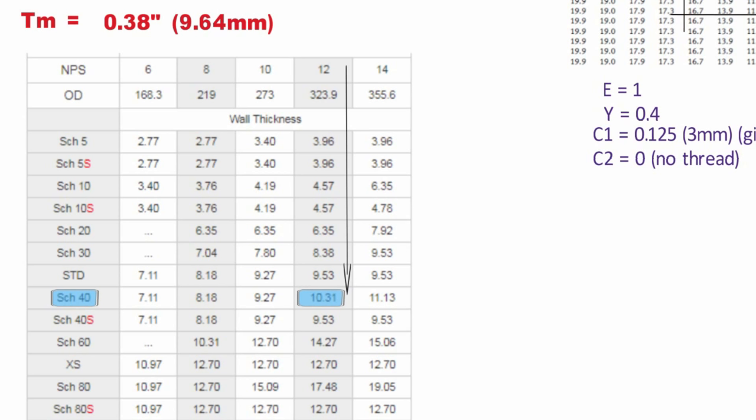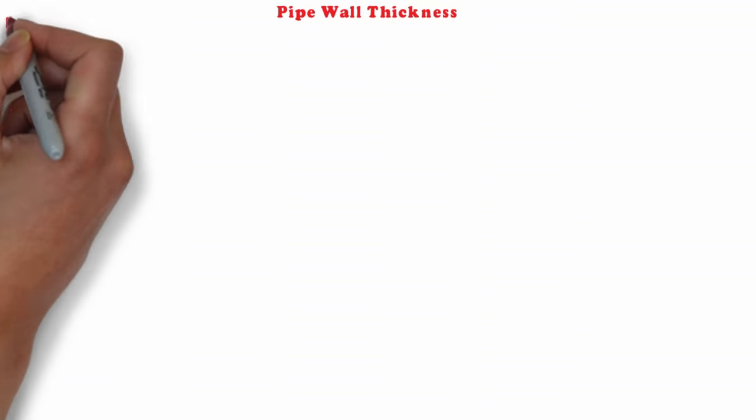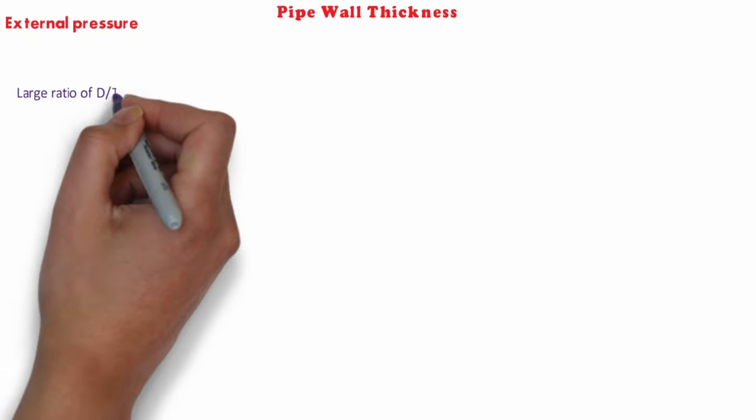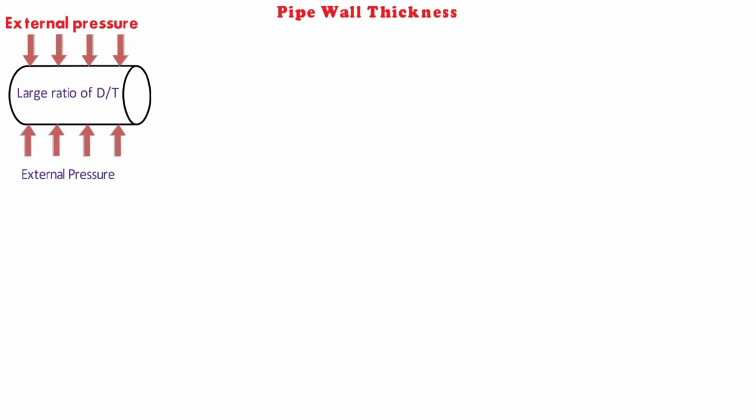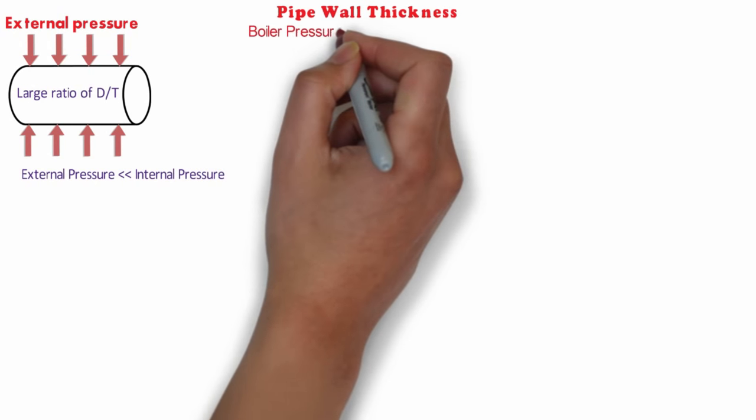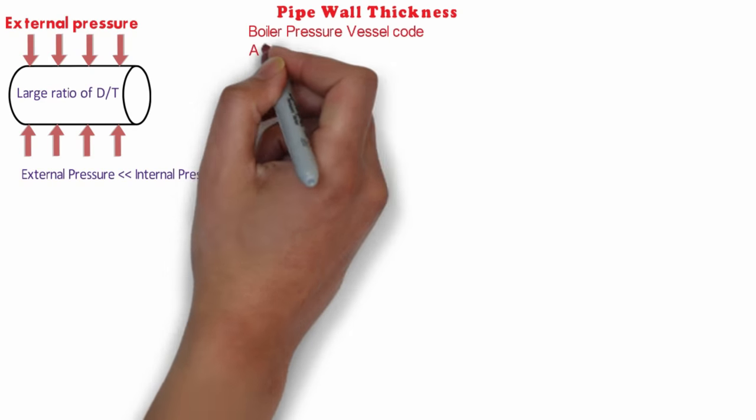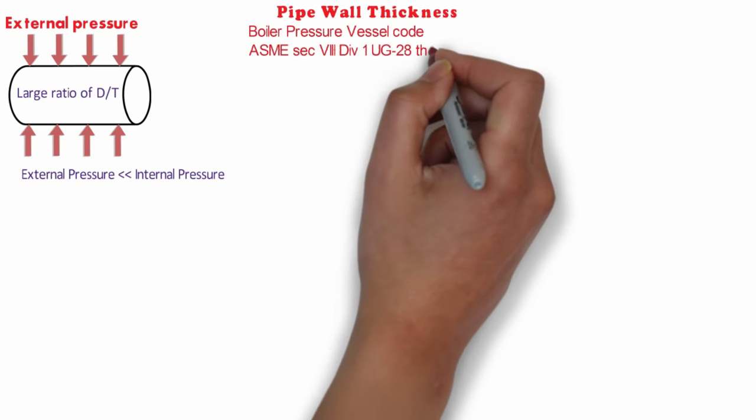Now we are going to discuss thickness of straight pipe under external pressure. We are considering pipe as a vessel in thickness calculation. As we all know, diameter to thickness ratio of a vessel is very high, due to which it can collapse under external pressure loads. A nominal wall thickness is provided to prevent phenomena like buckling and excessive compressive forces. To determine wall thickness and stiffening requirements for straight pipe under external pressure, the procedure outlined in the BPV Code Section 8 Division 1 UG-28 through UG-30 shall be followed.